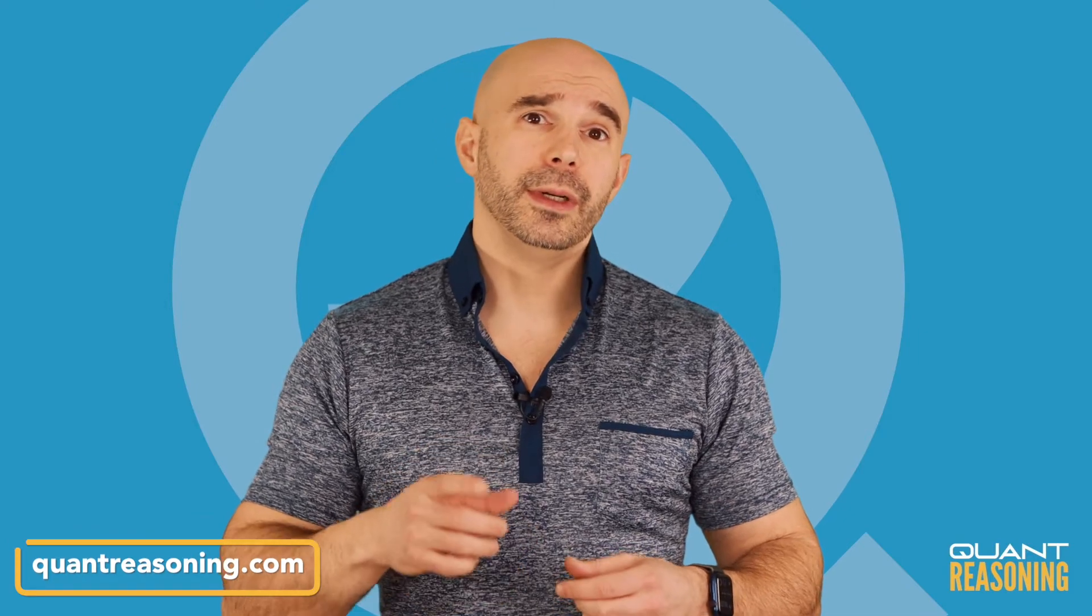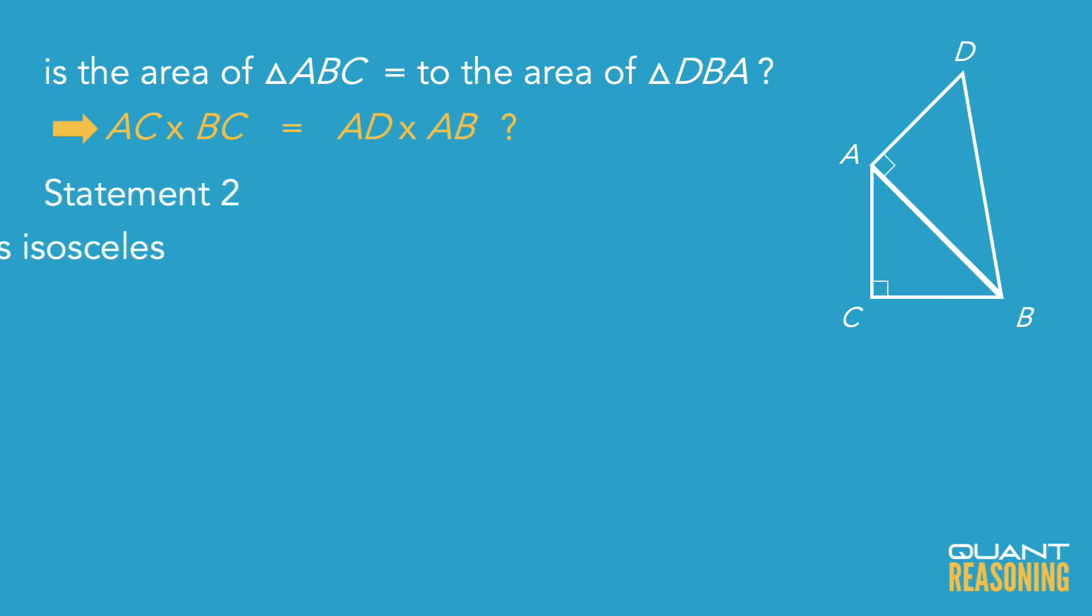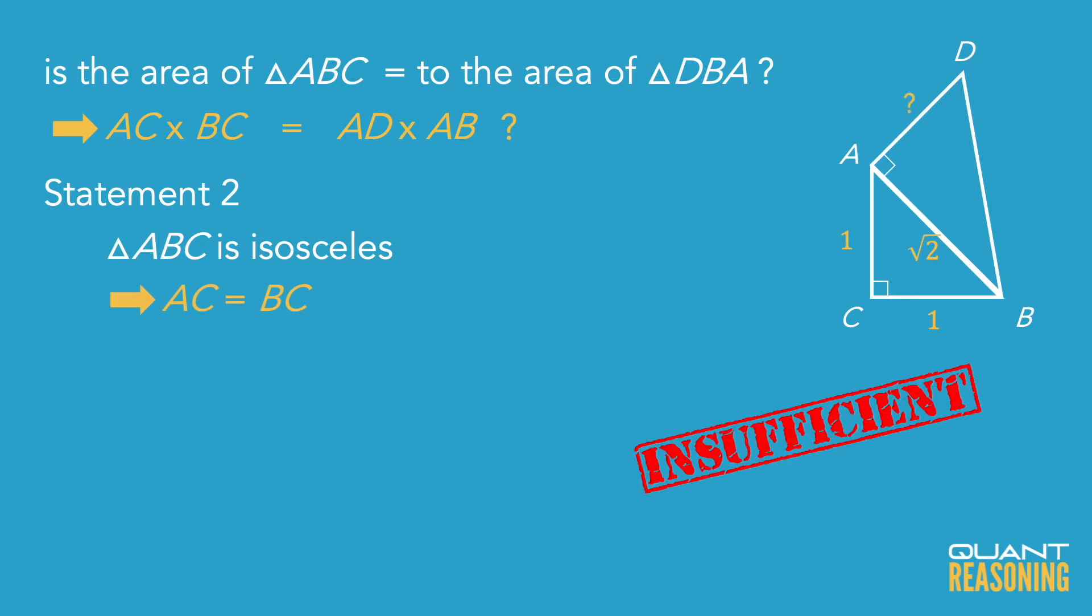Now statement 2 is somewhat similar, right? It only gives us a ratio between two sides. In this case, it's AC to BC. Now I can infer a third column for this ratio. Thanks to the Pythagorean theorem, I can say that if AC to BC is 1 to 1, then AB is square root of 2 in terms of ratio units. But I still don't have any information about the length of AD, and therefore I can't answer the question. Statement 2 is not sufficient on its own, and we'll eliminate B.